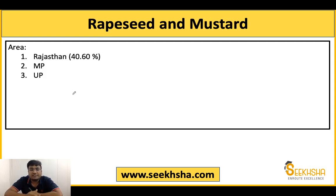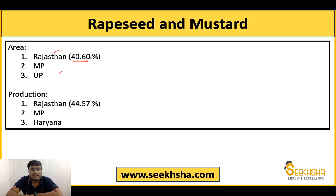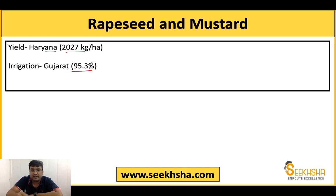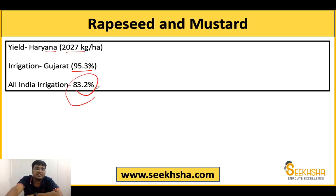After groundnut, let's come to rapeseed and mustard. Rajasthan cultivates the most area at 40.60%, followed by MP and UP. Because the area is so large, Rajasthan is again highest in production at 44.57%, followed by MP and Haryana. For yield, Haryana leads with 2027 kg per hectare. For irrigation, Gujarat has the highest at 95.3%, and at the All India level the average irrigation for rapeseed and mustard is quite good at 83.2%.